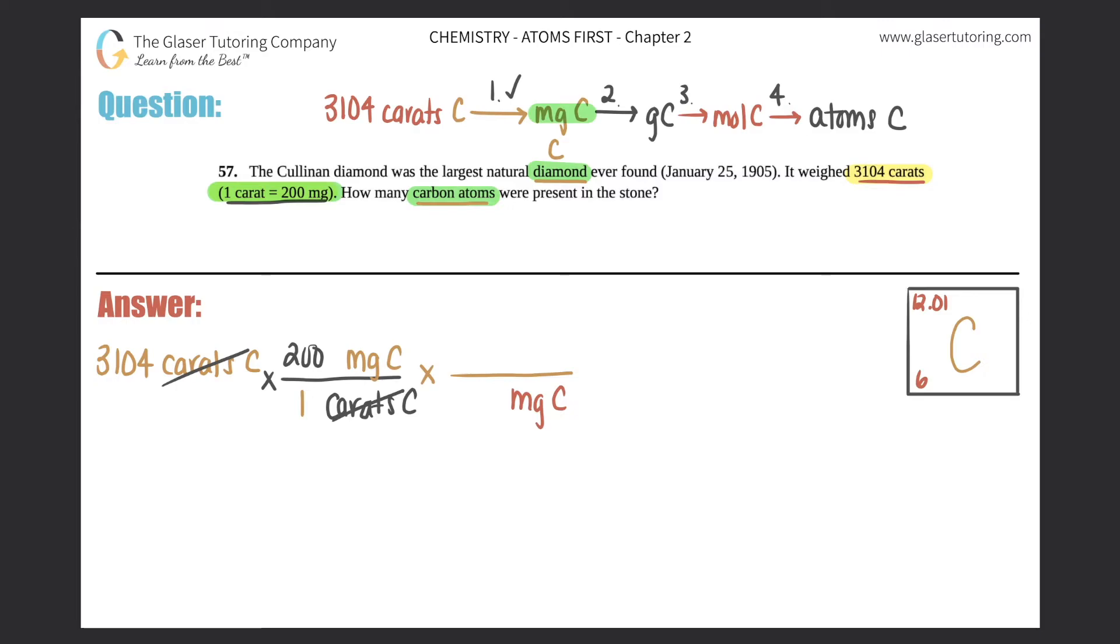Now multiply by another ratio with milligrams on the bottom and grams of carbon on top. This is your chapter one SI unit conversions. One gram equals a thousand milligrams, or if you prefer, one milligram is 10 to the negative three grams. I'll use one gram equals a thousand milligrams because I don't like negative exponents. Milligrams cancels out - second part done, we're halfway there.